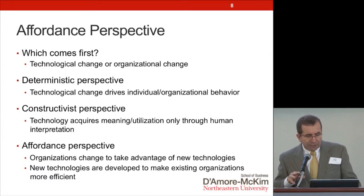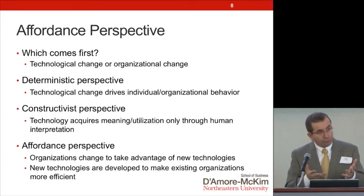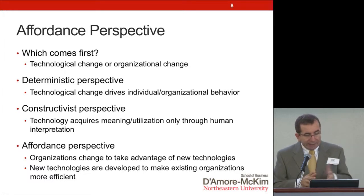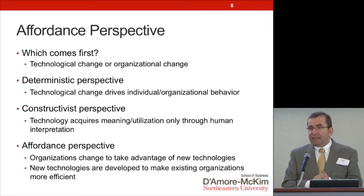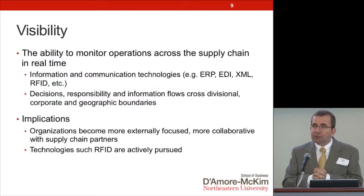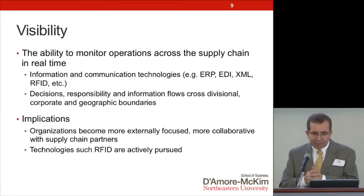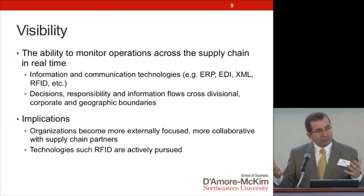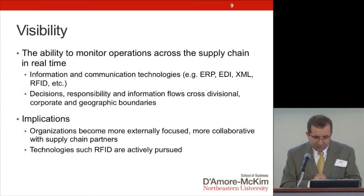I want to briefly touch on three basic affordances. The first is visibility. Information technology helps us make much better decisions because we know what is going on outside the boundaries of our companies. There is a lot of information visibility between suppliers, manufacturers, and customers — at every level of the supply chain, there is greater visibility and more collaboration.